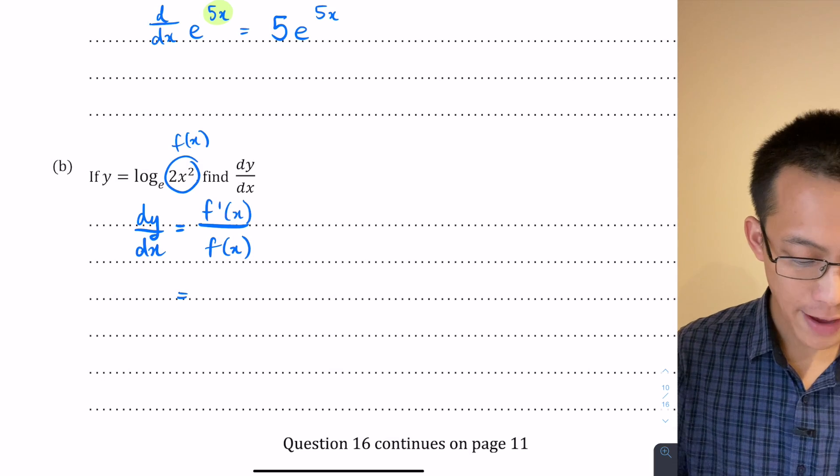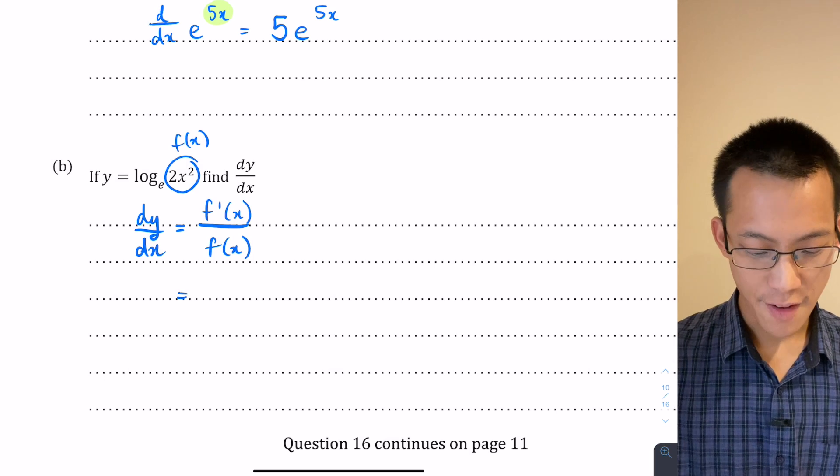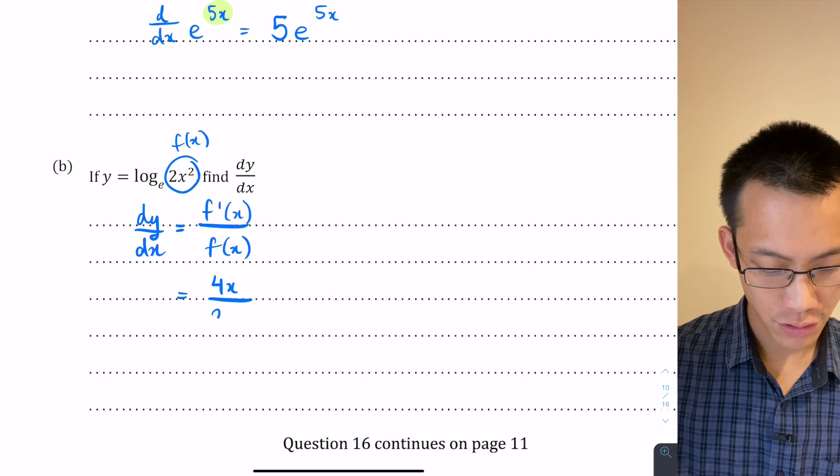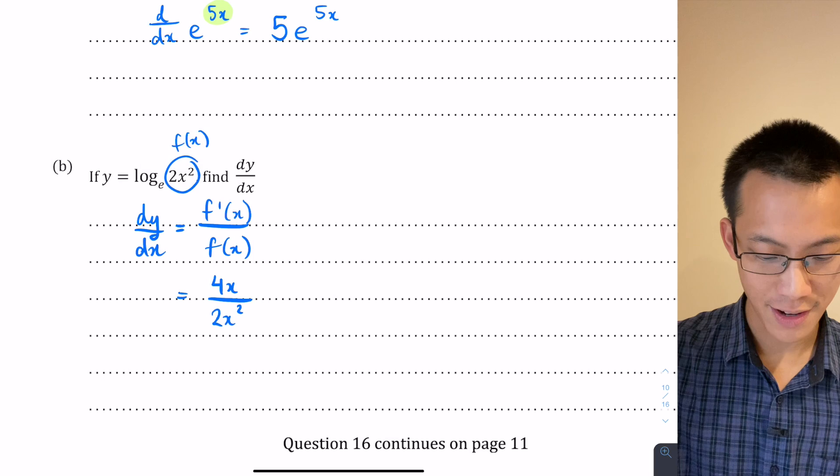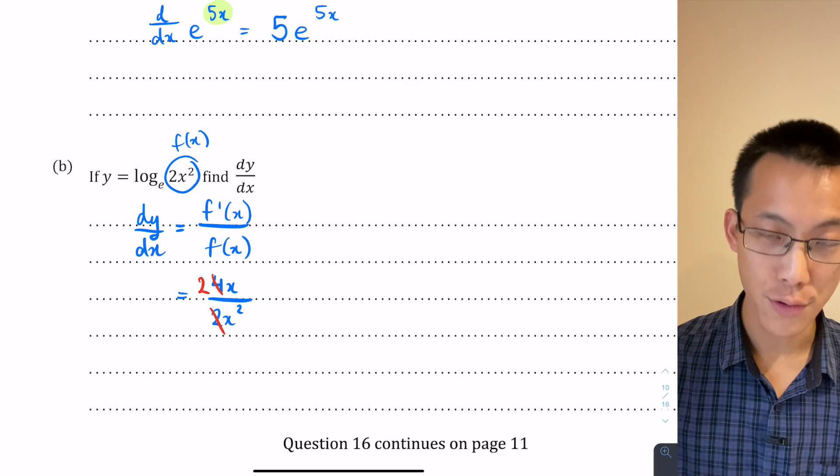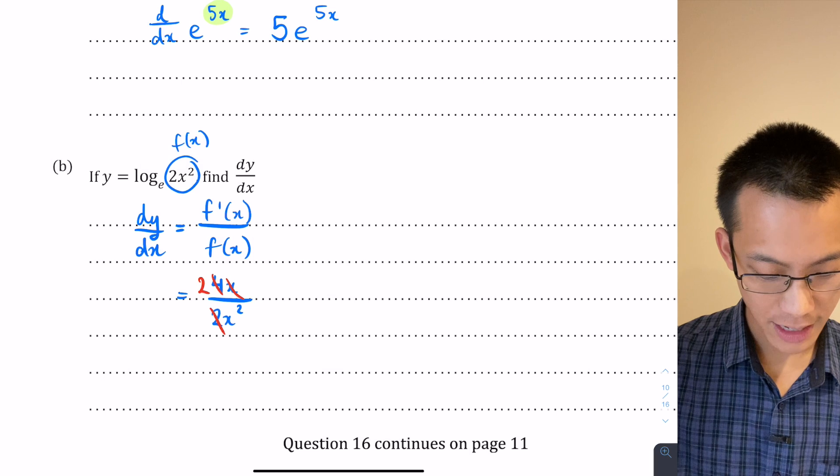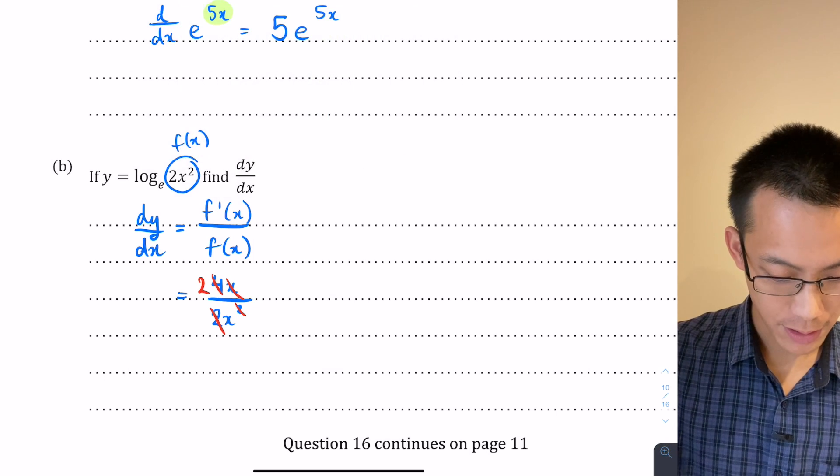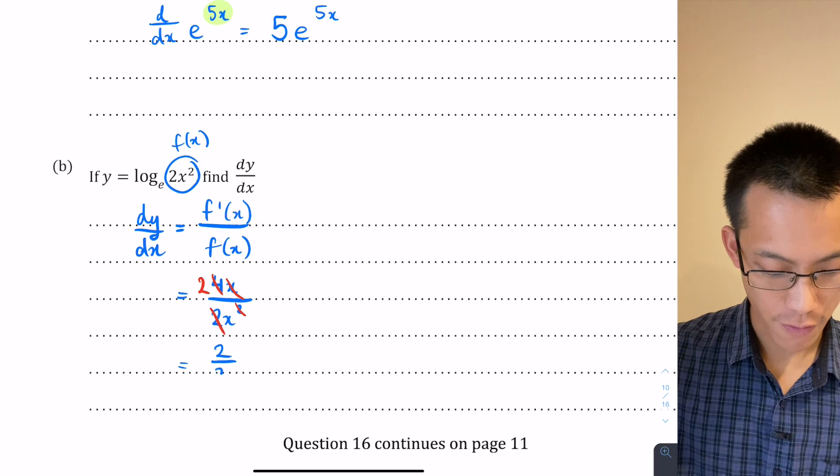So if f of x is 2x squared, if I differentiate that I'm getting 4x, divide that by 2x squared. There's just a bit of cancelling that happens. That 2 cancels leaving 2 on the top. This x will cancel with one of the x's on the bottom and that gives me my result which looks to me like 2 over x.